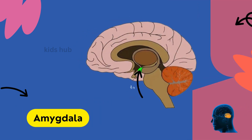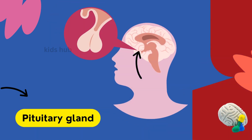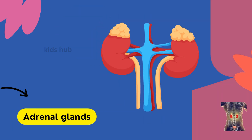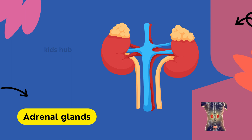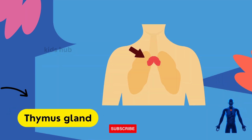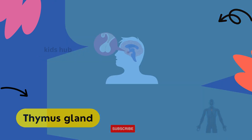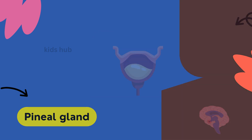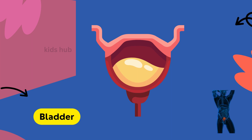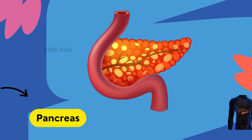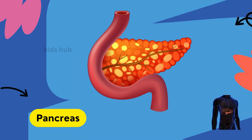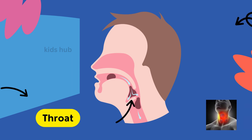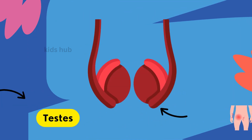Amygdala. Pituitary gland. Adrenal glands. Thymus gland. Pineal gland. Bladder. Pancreas. Throat. Testes.